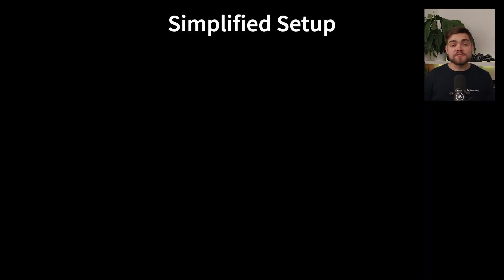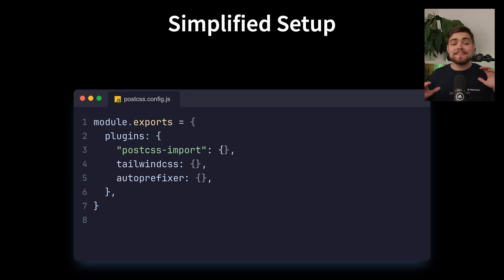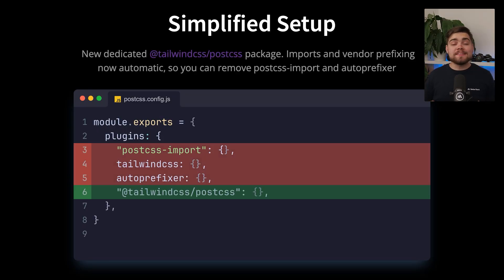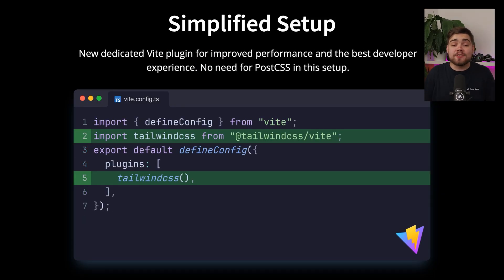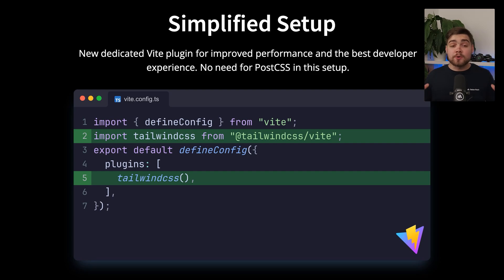Other files that might change include the PostCSS config — they've streamlined the whole setup process now. You no longer need extra plugins like PostCSS import or autoprefixer; they have a first-party plugin that will do it all for you. Even better, if you use Vite, you can get rid of PostCSS entirely with the Tailwind Vite plugin. Combined with no longer needing to set up the content array, you can now use Tailwind with pretty much zero configuration.